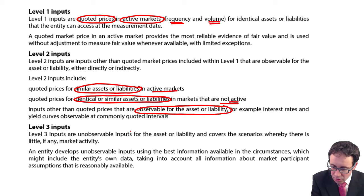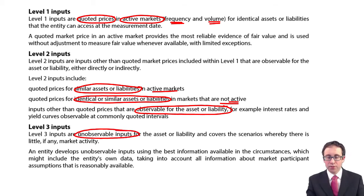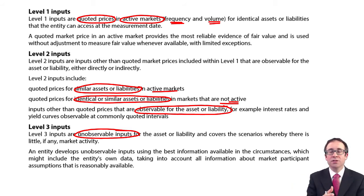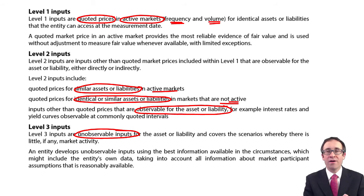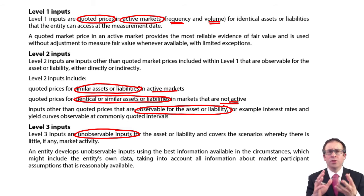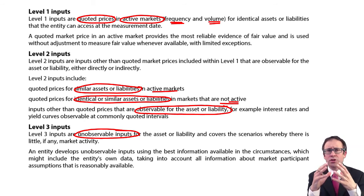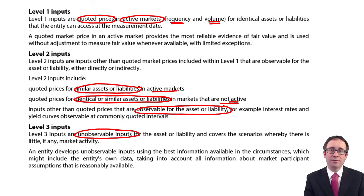Level three uses unobservable inputs — virtually no market activity whatsoever. From a financial reporting perspective, we're looking at fair value using discounted cash flow techniques: looking at interest receipts and interest payments, discounting them back to present value to work out the fair value of the financial asset or financial liability. There is nothing you can observe directly that gives you a quoted market price, nothing similar either. The asset or liability is quite unique in structure and nature, so you need to work out a value based on unobservable inputs — which effectively means discounted cash flows.